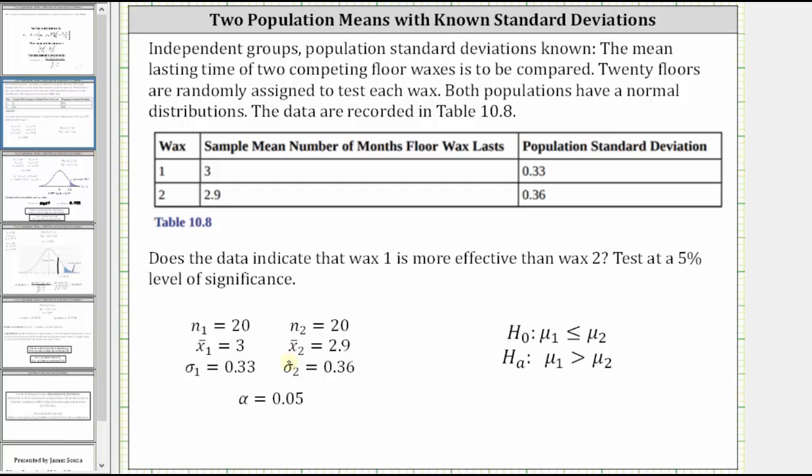Now to determine the null and alternative hypotheses. The question is, does the data indicate that wax one is more effective than wax two? If it's more effective, then the sample mean will be greater than the sample mean for wax two, and therefore the alternative hypothesis is μ₁ is greater than μ₂. And if μ₁ is not greater than μ₂, we have μ₁ is less than or equal to μ₂, which is the null hypothesis.